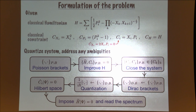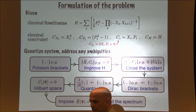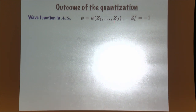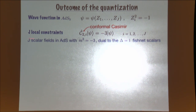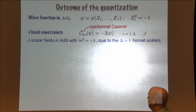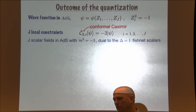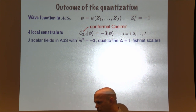Let me jump first to the bottom line of what we get when we go through this chain of quantization. The outcome of the quantization is that at the quantum level we are studying a wave function in AdS5 of J particles in AdS5 — not on the light cone. Each one of these particles has to satisfy that the second Casimir is equal to minus 3, meaning it describes a massive particle in AdS dual to an operator of dimension 1. These are the original scalars of the fishnet model.